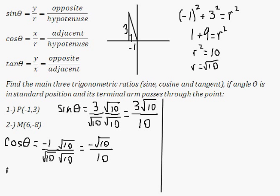Now I can look for tangent of theta. That's going to be equal to y over x — sorry, I initially said y over r but I mean y over x. So 3 over negative 1, because y is 3 and x is negative 1. 3 over negative 1 is equal to negative 3. And that's it — we have all three trig ratios.